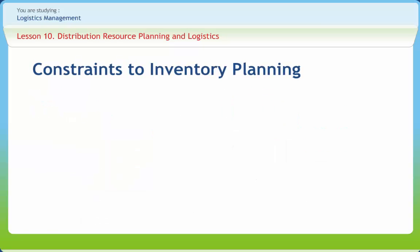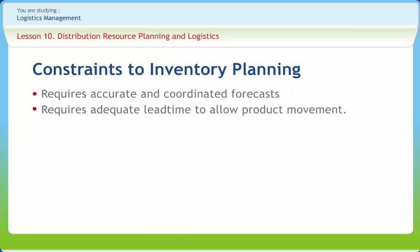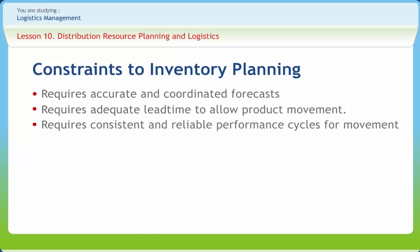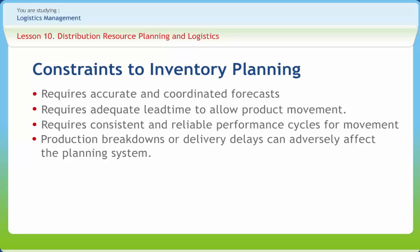Despite all the well-planned systems and management techniques, there are certain constraints to effective inventory planning. Inventory planning requires accurate and coordinated forecasts for each distribution center as well as adequate lead time to allow product movement. Errors in forecasts may exist because of prediction of demand at the wrong location or at the wrong time. Inventory planning also requires consistent and reliable performance cycles for movement between distribution facilities, and production breakdowns or delivery delays can sometimes affect the planning system quite adversely.